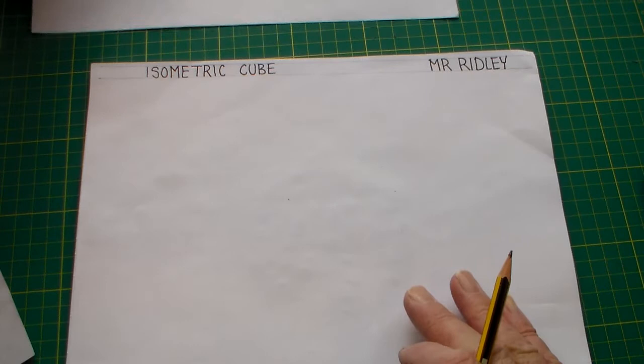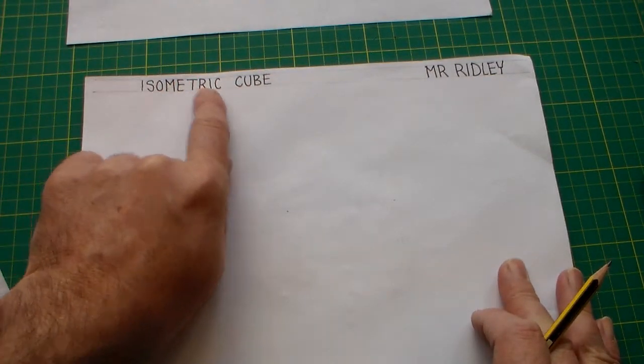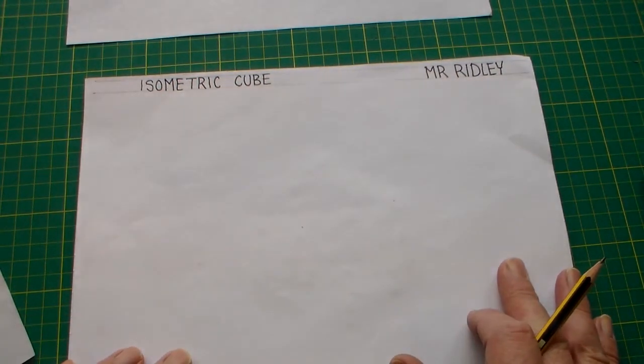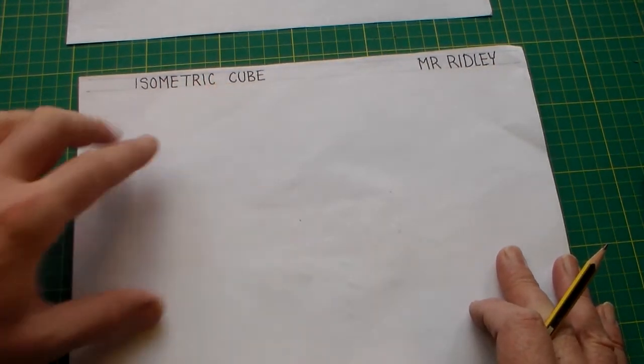So first of all, we're going to start with a blank piece of paper and we're going to add our title and our name, and the title is isometric cube.